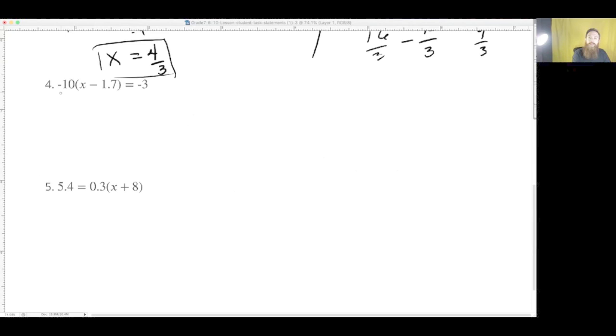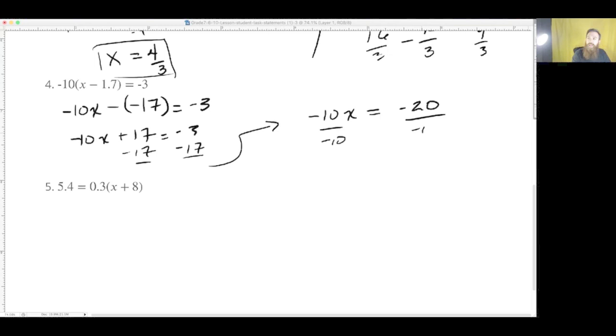Okay. For the next one. So we could divide by 10, but what do we notice? We have a decimal on the inside. So let's just multiply everything by negative 10. So that's negative 10x minus negative 17 equals negative 3. Remember that meme? Negative 10x plus 17 equals negative 3. Subtract by 17 both sides. Rewriting this over here, this is negative 10x equals what's negative 3 minus 17. That's negative 20 divided by negative 10. x equals 2.